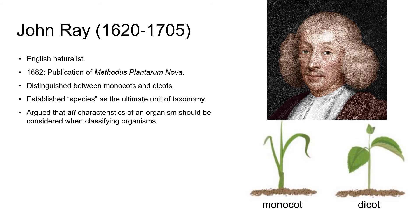Around 60 years later, in 1682, the English botanist John Ray published one of the most influential books on plant classification of the 17th century. John Ray is one of the first known botanists to observe and describe the differences between monocots and dicots. He argued that rather than classifying plants according to their life form, you should first classify them as a monocot or dicot, then classify them further using all observable physical characteristics.